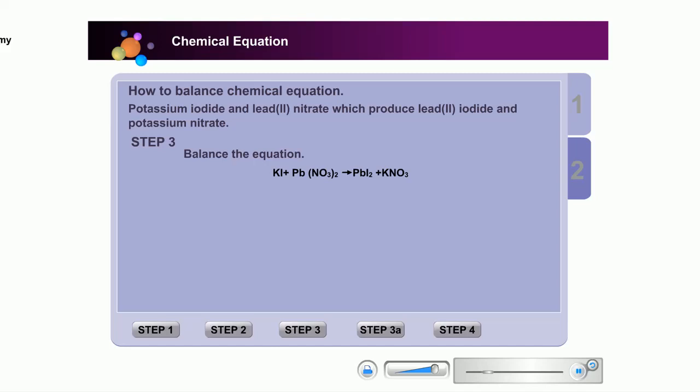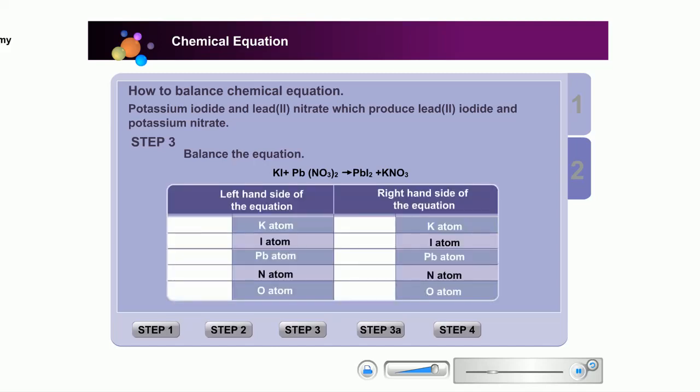If no coefficient is shown, the coefficient is understood as 1. Let's see if the equation is equal or not. Count and key in the number of atoms of the elements on each side of the equation. Are the numbers of atoms of the same elements equal? If they are, then the equation is balanced. If not, click on the Step 3a button.